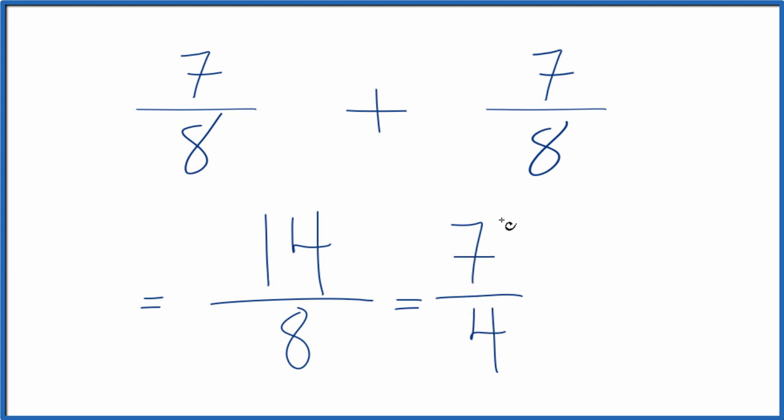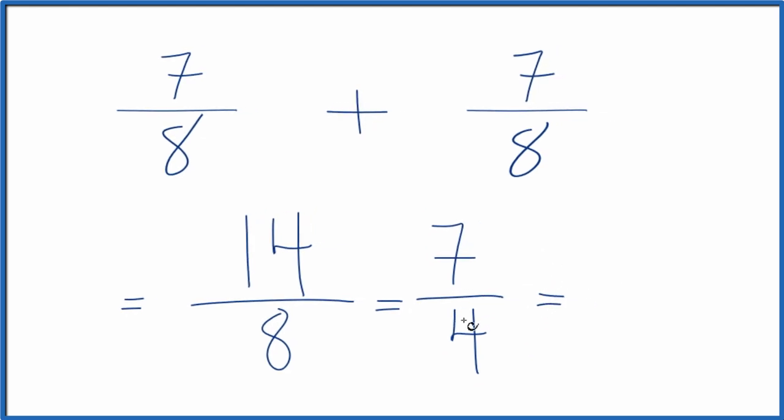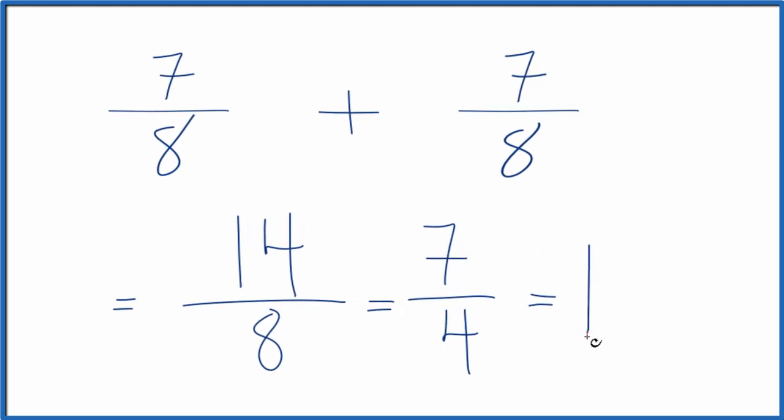This is an improper fraction because 7 is larger than 4. So we could write it as a mixed number. 4 goes into 7 one time with 3 left over. We bring the 4 across. So 1 times 4, that's 4, plus 3. That gives us the 7, and we just kept the 4 the same.